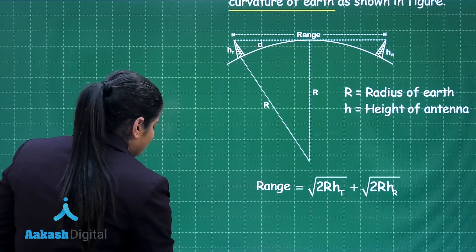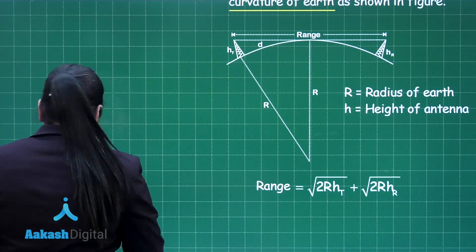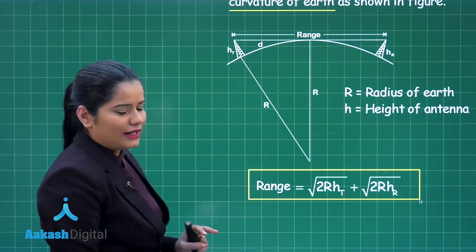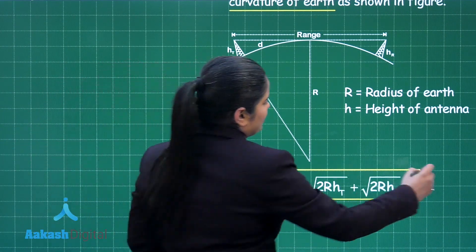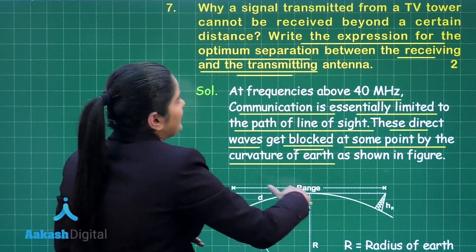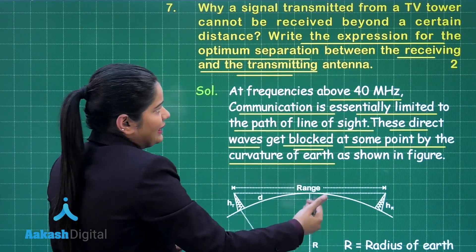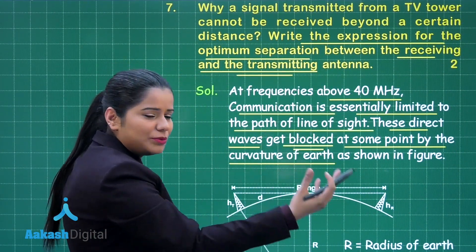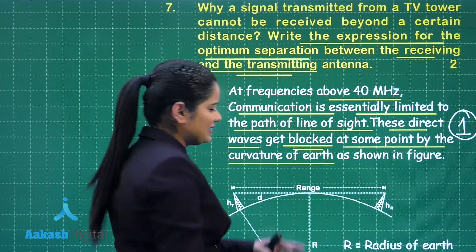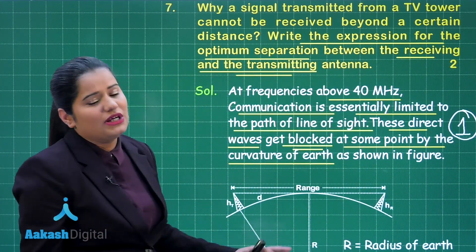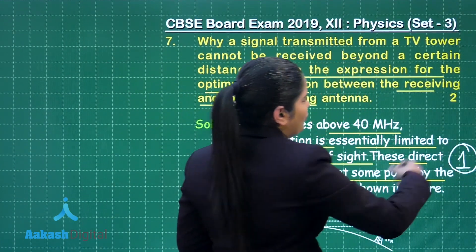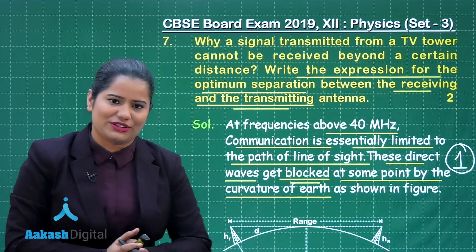You just need to write this expression to get one mark, and for explaining why these signals cannot be received beyond a certain distance you will get one mark for that explanation. I hope this question is also very clear to you. Now let us move on to the discussion for the next question.